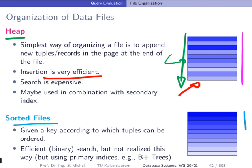The other option is to use a sorted file. As you can see in the illustration, it is nicely sorted by matriculation number or name of a tuple. Keeping this file sorted is more expensive, so the insertion is more expensive than for the heap. But if you want to search for a certain value, you can use binary search or a smarter index structure like a B+ tree on top of the sorted file. The access is much less expensive than for the heap organization.